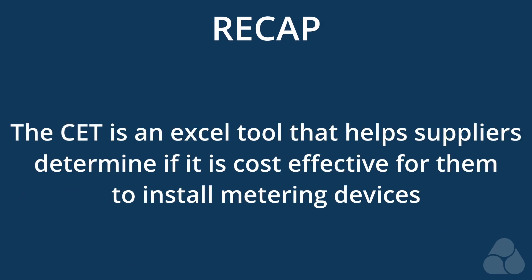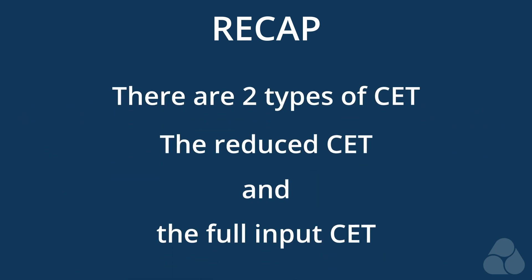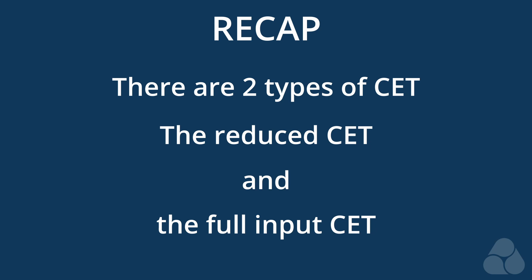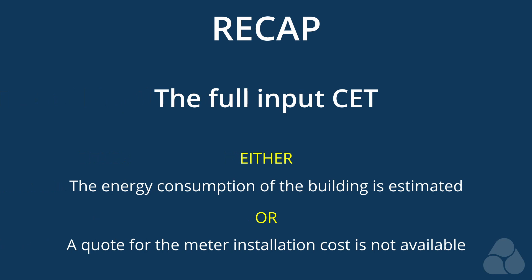To recap: the CET is an Excel format tool designed to help heat suppliers determine if it is cost-effective to install metering devices. There are two types of CET — the Reduced and the Full Input. The Reduced CET is to be filled out when both the actual energy consumption of a building is known and a code for meter installations is available. The Full Input CET is to be used when the energy consumption of a building is not known and/or a code for the installation of meters is not available.